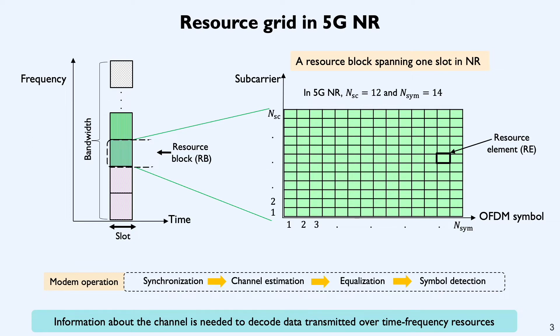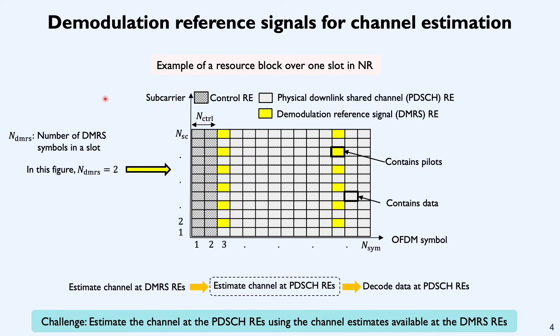How does the receiver actually estimate this channel in a downlink scenario? Let's take a look at the concept of resource block in more detail. Here is a resource block that comprises three different kinds of resource elements. The first kind of resource elements is called the control REs that are sent over the first two OFDM symbols in this configuration. The remaining two kinds of REs are the PDSCH REs, which is Physical Downlink Shared Channel REs that contain data, and DMRS REs, which is Demodulation Reference Signal REs that contain pilots.